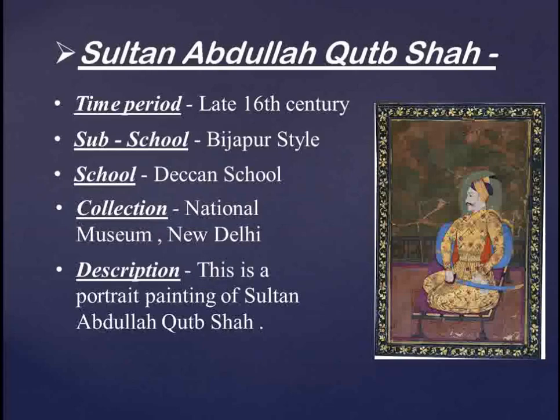In his other hand he is holding a handkerchief. Behind the Sultan's head, a halo has been created to give a divine look. The throne's cushion is created in purple and blue.